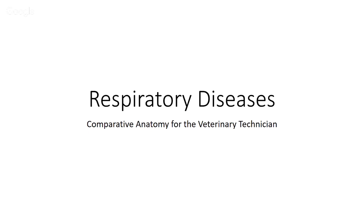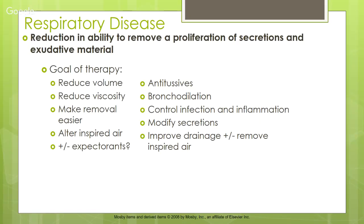Welcome back — today we're talking about respiratory diseases as they relate to comparative anatomy. Respiratory disease is simply the reduction in ability to remove secretions and exudative material — the gunk that builds up in your throat and nose that you need to clear so you can breathe better. The goal of therapy is to reduce the volume and viscosity of those secretions to make removal easier, alter the inspired air, and use expectorants.